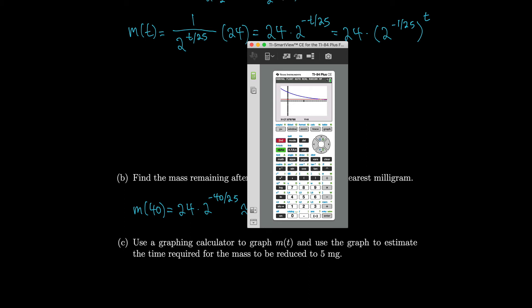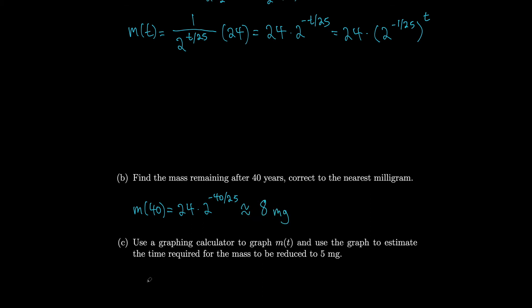And let's go to second, trace, we've got the calc menu. We'll go to 5, which is intersect. Our first curve will be our exponential curve. Our second one is our y equals 5 curve, 5 milligrams. And we're going to guess that it happens around there. It looks like our intersection is when x is 56.7. So that's like 57 years. So I'll write m of t equals 5 when t is approximately 57 years.